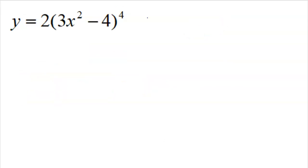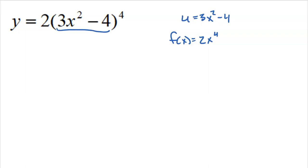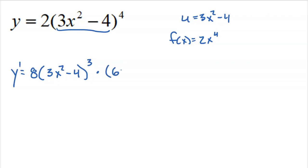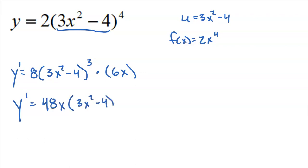Here's another one: u is 3x squared minus 4, and the overall function is 2x to the fourth. Using the power rule: 4 falls down, 4 times 2 is 8, leave u alone with new power 3, then multiply by the derivative of u, which is 6x. Multiplying 8 times 6x gives 48x times 3x squared minus 4 to the third. That's the derivative.